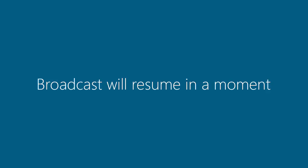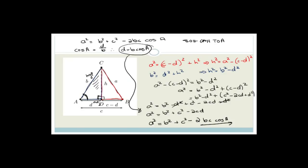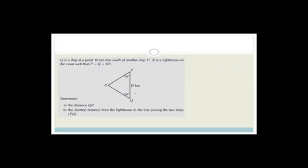The trick with the cosine rule is that you generally use it if you've got two sides and an enclosed angle — it looks kind of like a C shape. Whereas if you have two sides that are not enclosing the angle, then you use the sine rule.